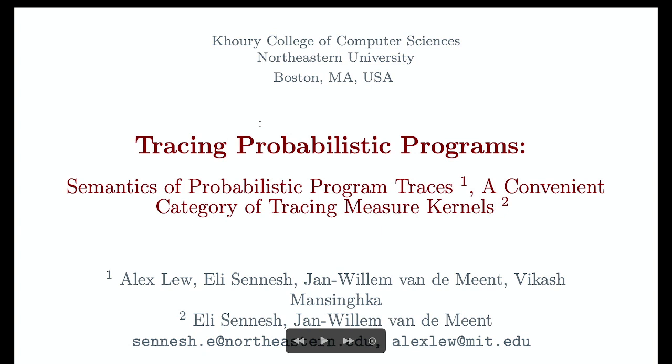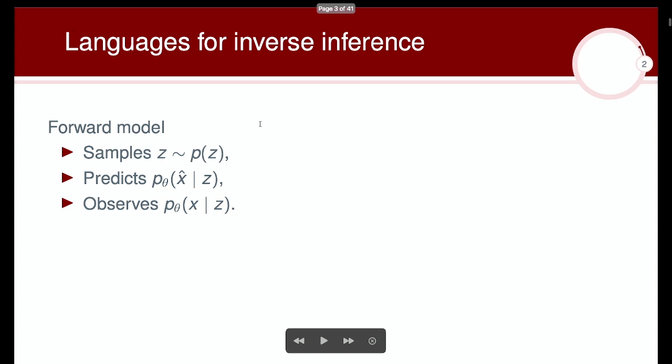Hi, my name is Eli Senesh. I'm speaking on behalf of a group that includes both myself and Alex Lev, who actually wrote a substantial portion of this work, so I'm presenting jointly since he just presented. I'll be presenting on our abstract semantics of probabilistic program traces, that's the first one, and a convenient category of tracing measure kernels, that's the second one.